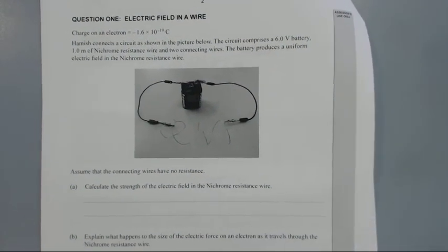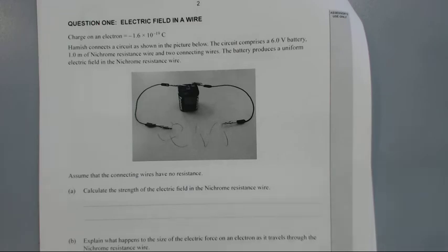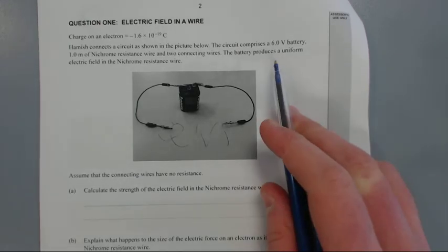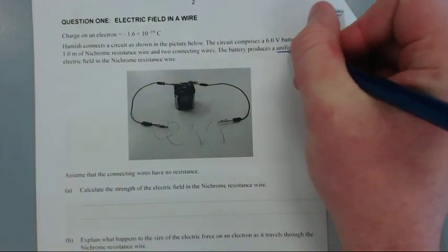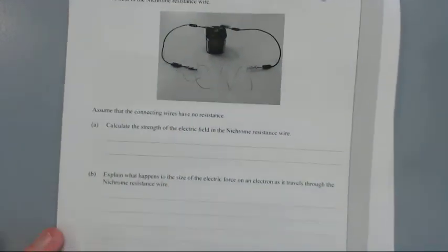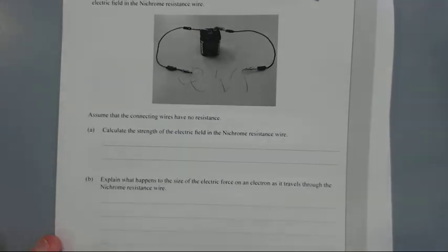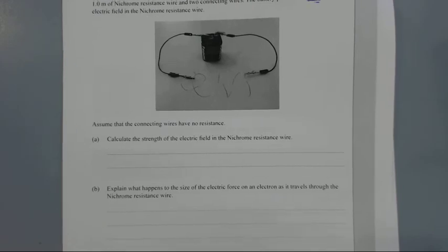Hamish connects a circuit as shown in the picture below. The circuit comprises a 6 volt battery, 1 meter of nichrome resistance wire, and 2 connecting wires. The battery produces a uniform electric field in the nichrome wire. Assume the connecting wires have no resistance. Calculate the strength of the electric field in the nichrome wire.